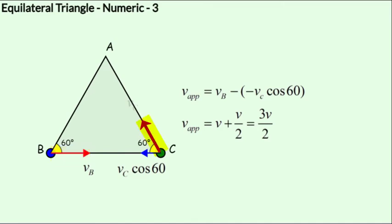For ball C, the velocity will point towards ball A with a magnitude of v. So resolving this along line BC, we obtain the component as v_c cos 60 in the negative direction. Therefore, the velocity of approach between B and C is 3v over 2.